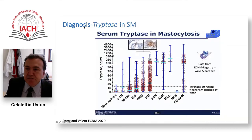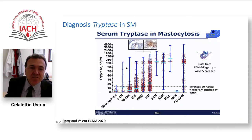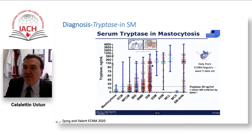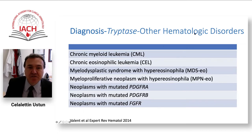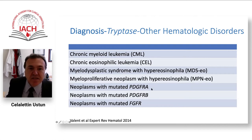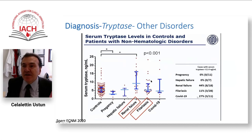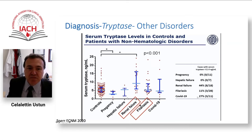Serum tryptase is very important — if you are concerned about mastocytosis, please obtain serum tryptase. Tryptase is higher in advanced groups than indolent groups, though indolent patients also have increased levels. However, keep in mind that serum tryptase can be elevated in other hematological disorders like chronic myeloid neoplasms, chronic eosinophilic leukemia, or PDGFR-beta/alpha-affected diseases, as well as renal failure and parasitic infections.